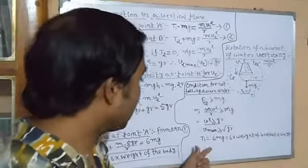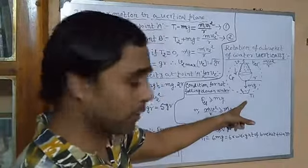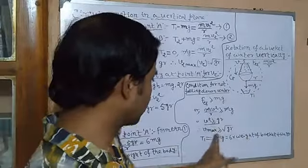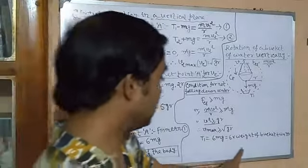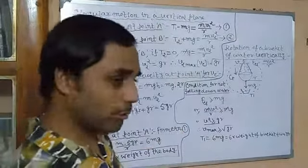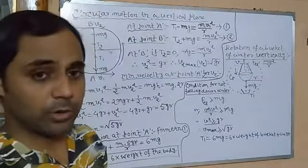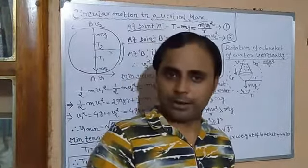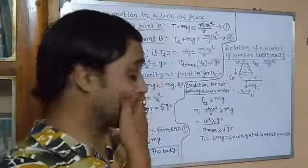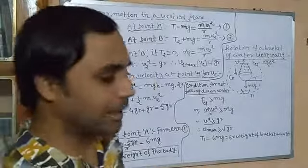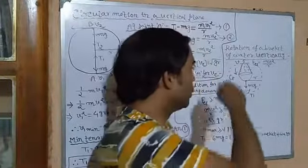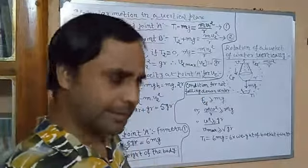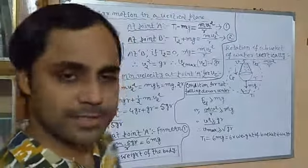This experiment cannot be easily performed with a bucket completely full of water. The tension at the bottom is 6mg — meaning 6 times the weight of the bucket plus water — which is very difficult to manage on our hand. That is why it is very difficult to perform this experiment with a full bucket of water. It can be performed by taking a half-filled bucket of water.